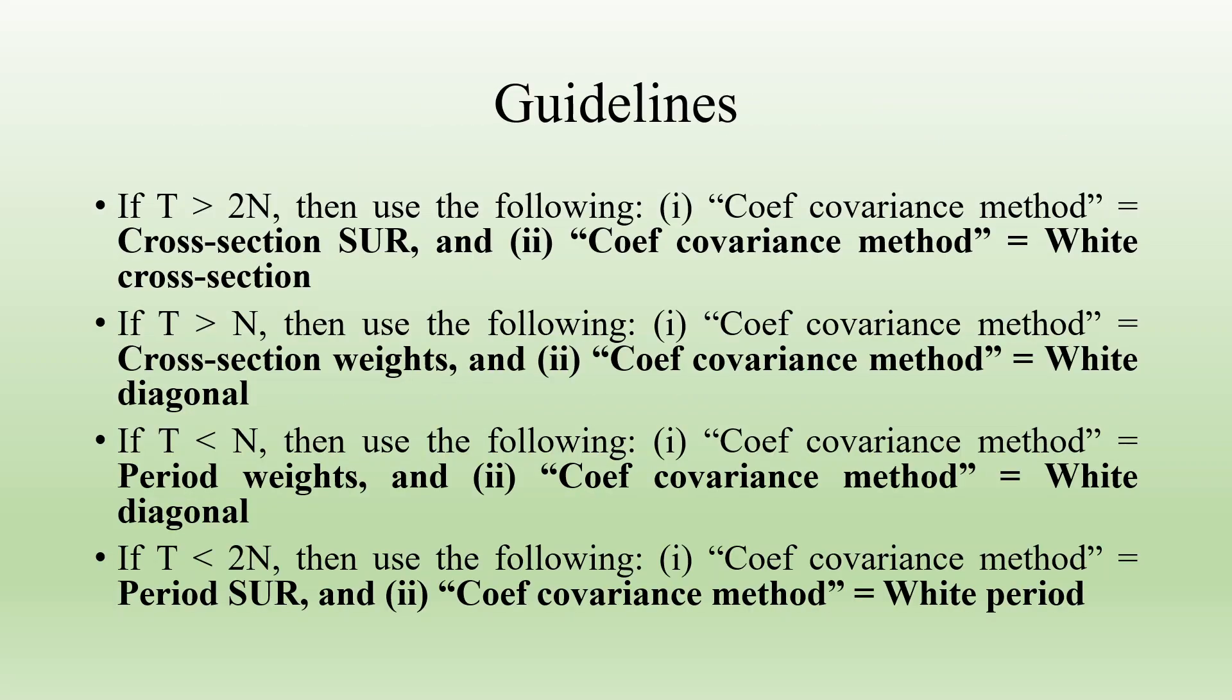Now, there is a guideline which you will have to follow. If T is greater than 2N, then use the following method: coefficient covariance method with cross-section SUR and coefficient covariance method with white cross-section.